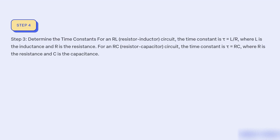Step 3: Determine the time constants. For an RL (resistor-inductor) circuit, the time constant is τ = L/R, where L is the inductance and R is the resistance. For an RC (resistor-capacitor) circuit, the time constant is τ = RC, where R is the resistance and C is the capacitance.